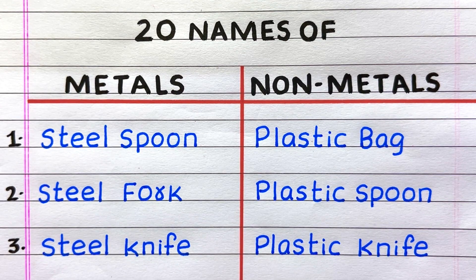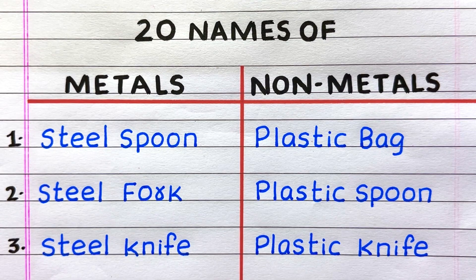The first name of a non-metal is plastic bag. Second, plastic spoon. Third, plastic knife.